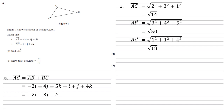We're now going to use the cosine rule. We've got to be careful which way round we put the sides. We're looking for angle ABC, so if we look at the triangle, the side opposite this angle is AC, so this is the side that's going to go on the left of our cosine equation.